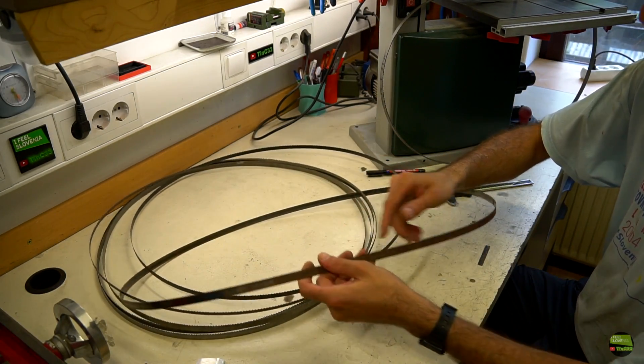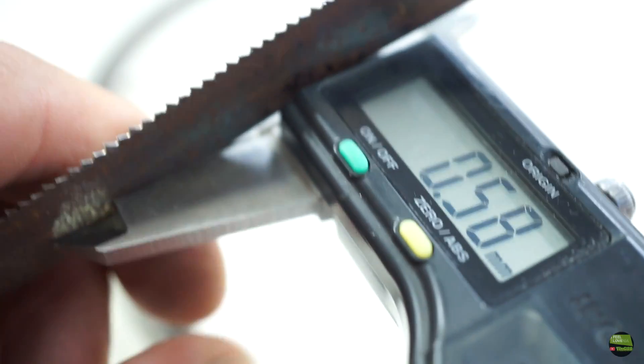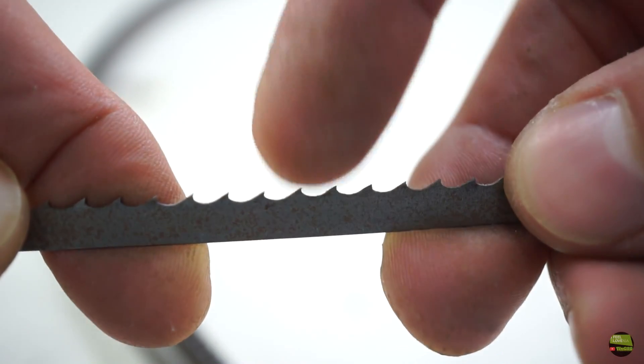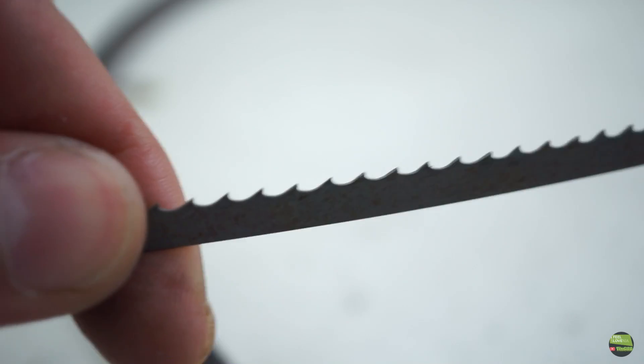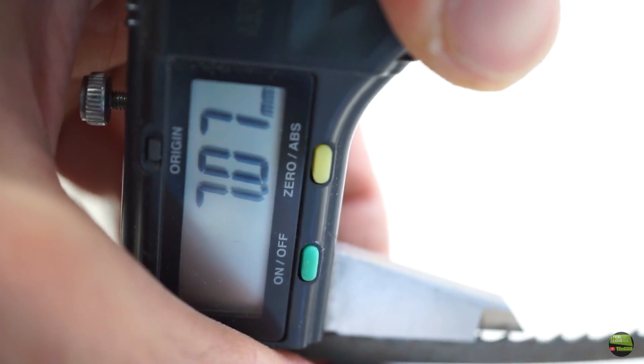Then I got here 14 teeth per inch Metabo blade for cutting non-ferrous material. It's also thin but doesn't cut metal so good. This is a 6 teeth per inch saw. I ordered it from a local guy who makes blades by request. It's for wood cutting, but it's only 7mm wide, so you can cut small radius with it.